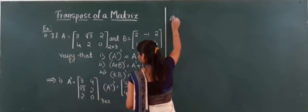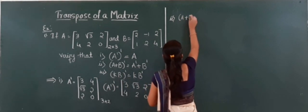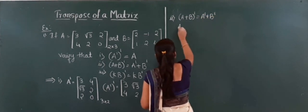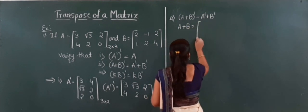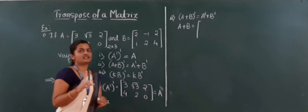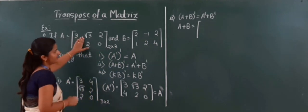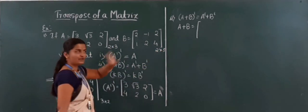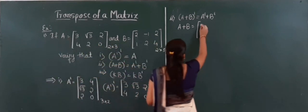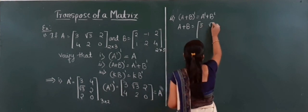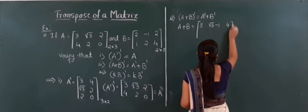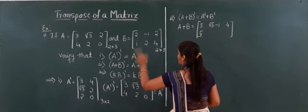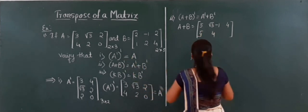Next, we verify (A + B)' = A' + B'. First, I find A plus B. Matrix A is 2 by 3 and matrix B is also 2 by 3, so we can add corresponding elements: 3 + 2 = 5, root 3 minus 1, 2 + 2 = 4, 4 + 1 = 5, 2 + 2 = 4, 0 + 4 = 4. This is our A plus B.